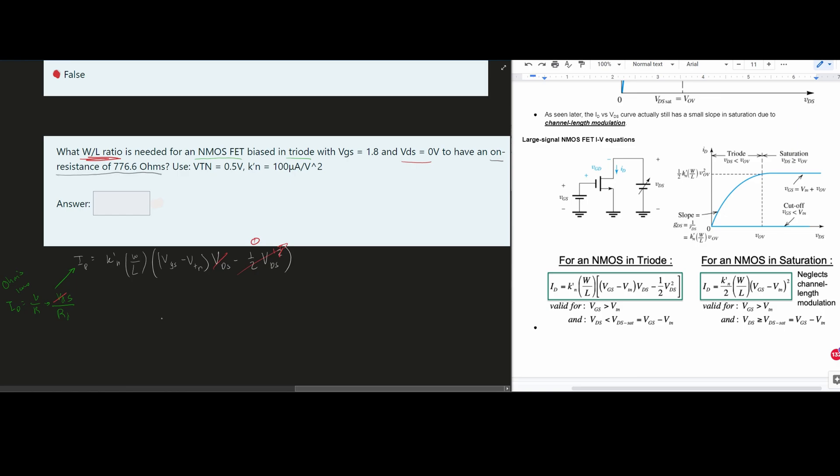So our I_D is just going to be one over our R_D. And this is equal to K' N times W over L times (VGS minus VTN). And then this is where we plug in our values. So we have one over our resistance. And then we would move this to the other side. We need to divide by K' N and by (VGS minus VTN).